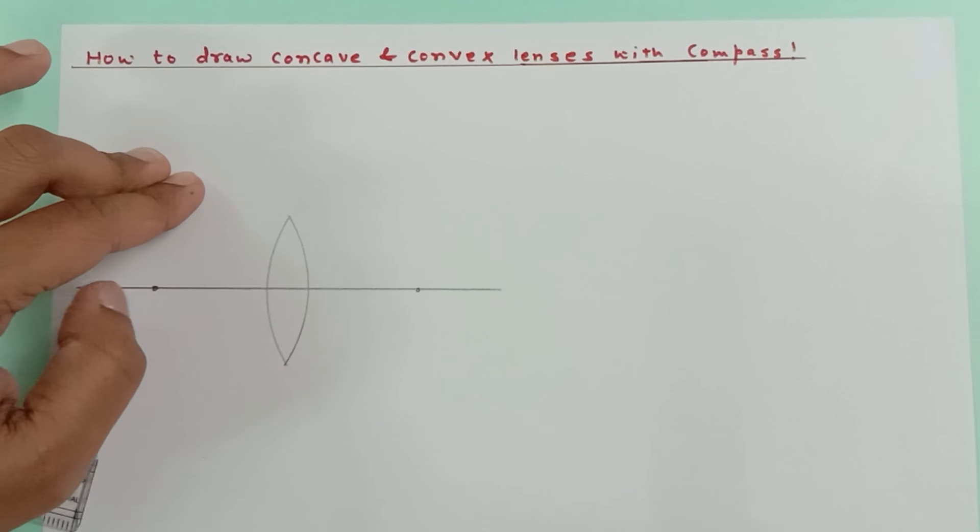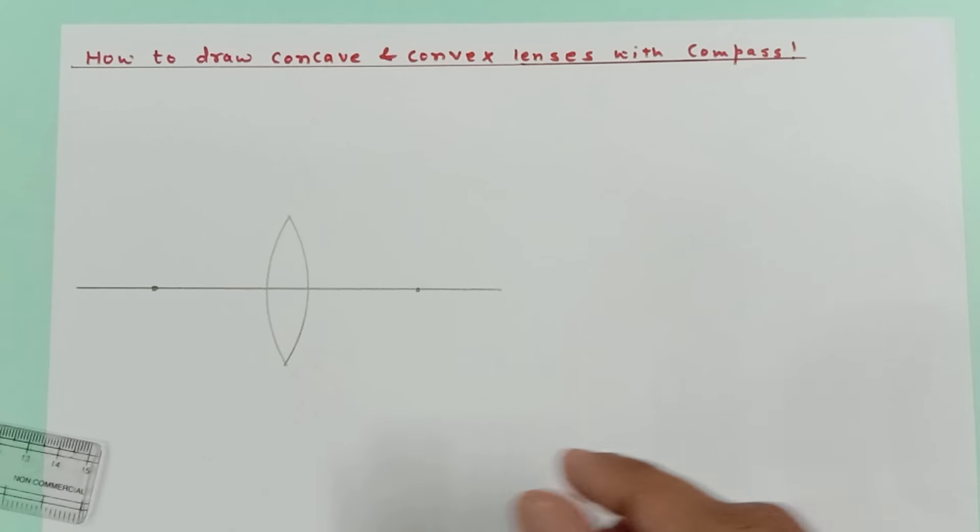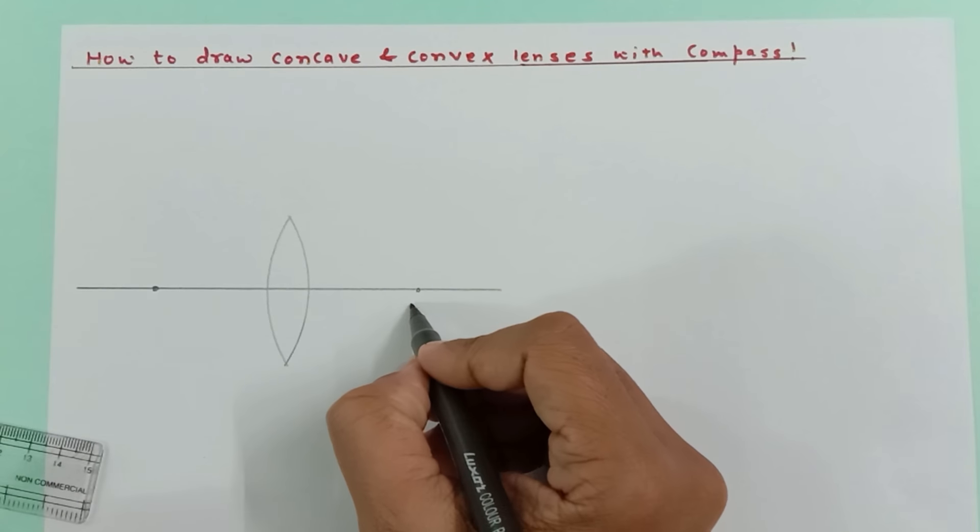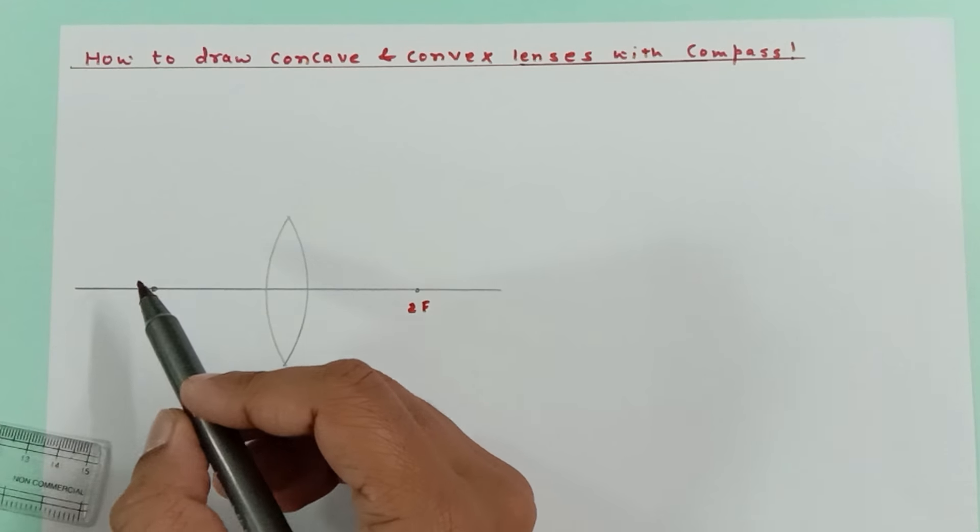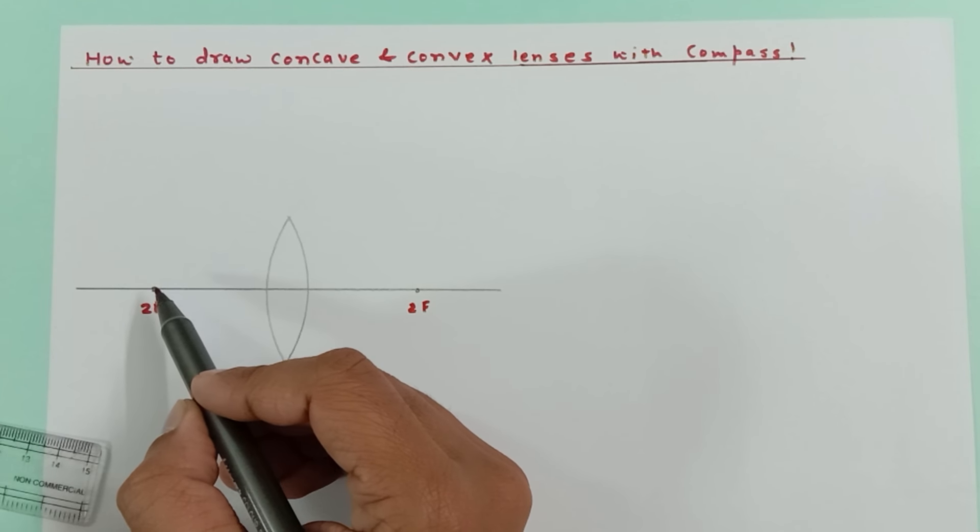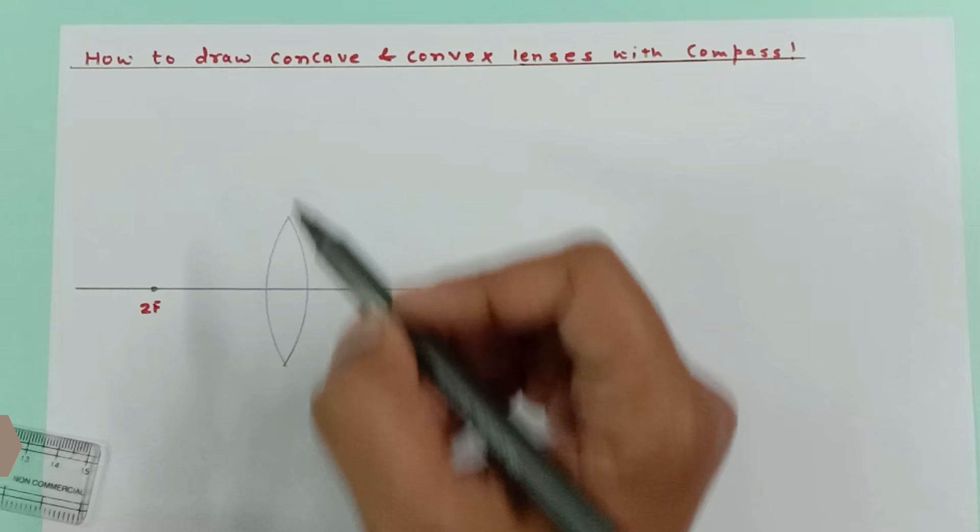Now people, why am I asking you to mark these points? Because these two points are the radius of curvature - that means these two points are going to serve as 2F. So this point is 2F, this point is 2F, because we took this point as the center for this particular curve.